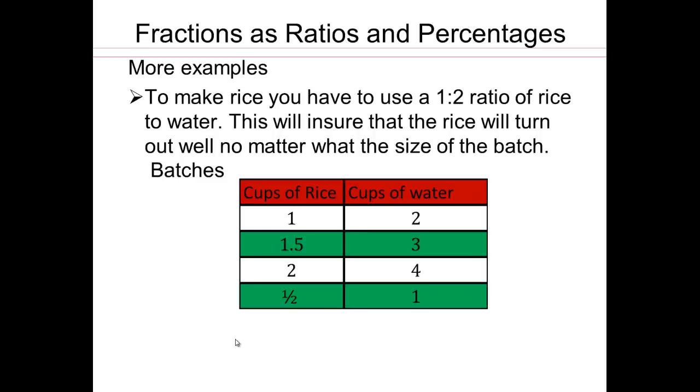So here, we have different batches. If you take 1 cup of rice, you're going to have 2 cups of water. If you take 1 and 1 half cups of rice, you're going to take 3 cups of water. Always twice the number of cups of rice is how much water you want. So if you have 2 cups of rice, 4 cups of water. Half a cup of rice, 1 cup of water. So working with ratios allows you to have flexibility in how much you're cooking.